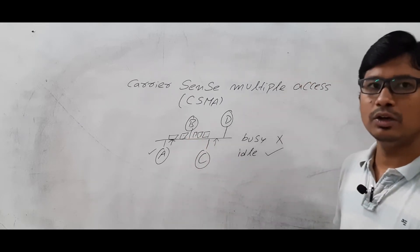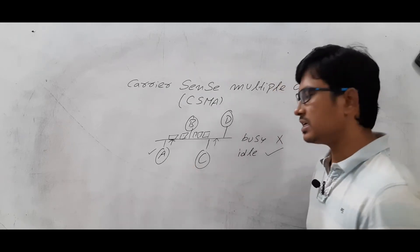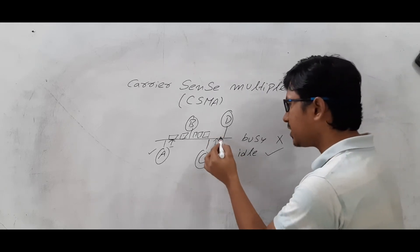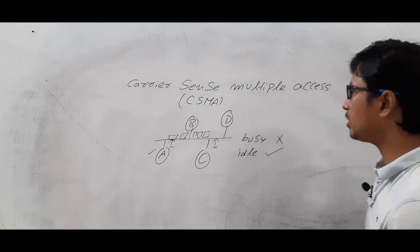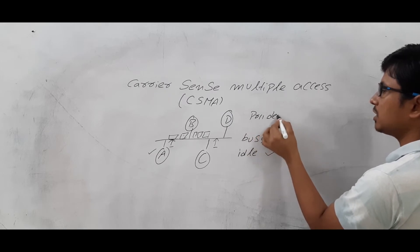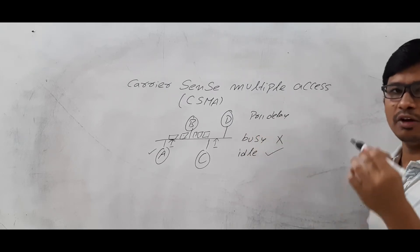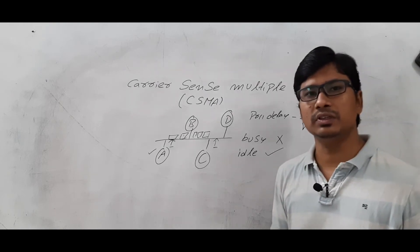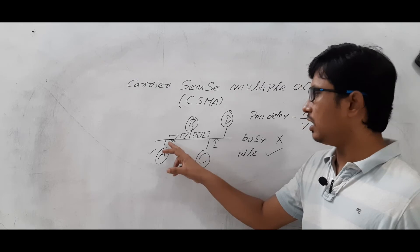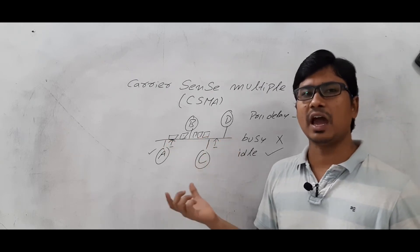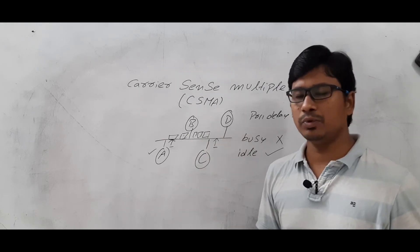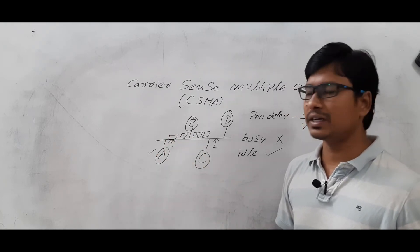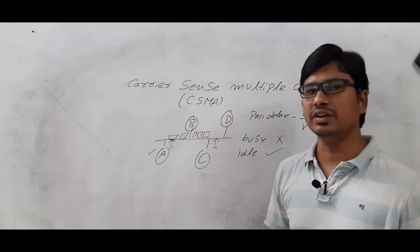Then there will be a collision, because node A has sent data and node C also sends data at the same instant. So the collision will depend on the propagation delay. Propagation delay depends on the distance between source and destination and the propagation speed. If the propagation delay is high, there is a chance of collision in the CSMA mechanism. If there is a collision, the node has to re-transfer the packets. This is the working process of the CSMA mechanism.